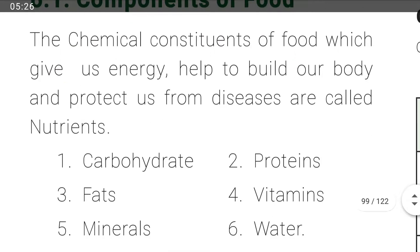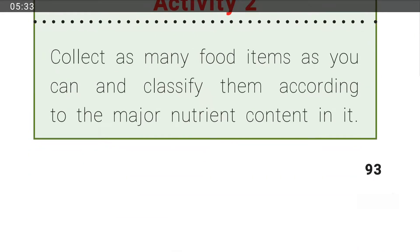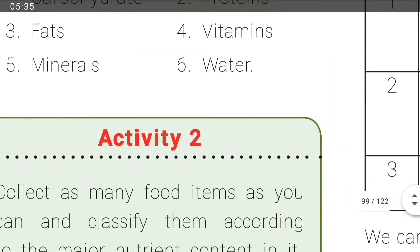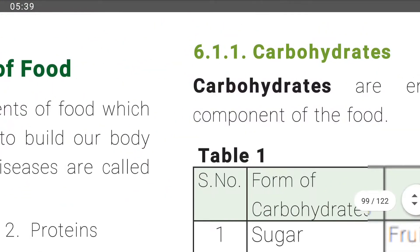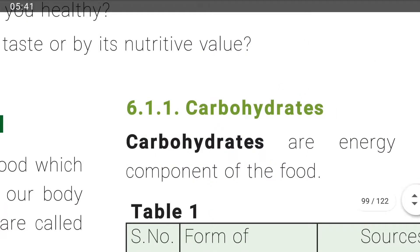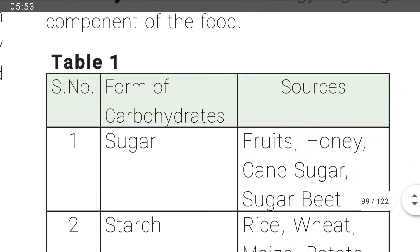Nutrients are: carbohydrates, protein, fat, vitamins, minerals, and water. Now, what are the contents we use in food? First, we see carbohydrates. Underline the word: carbohydrates are the energy component of food. From the table, carbohydrates come in the form of sugar — sources include milk, honey, cane sugar, and sugar beets.